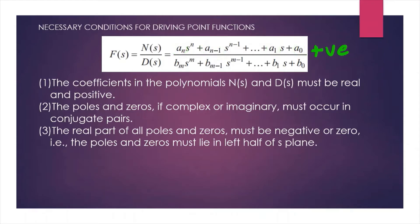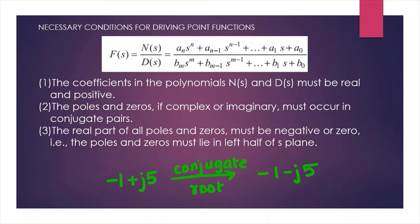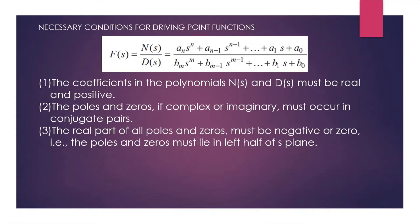The second condition: the poles and zeros, if complex, must occur as conjugate pairs. For example, if there is a root −1 + j5, then there must also be another root −1 − j5.